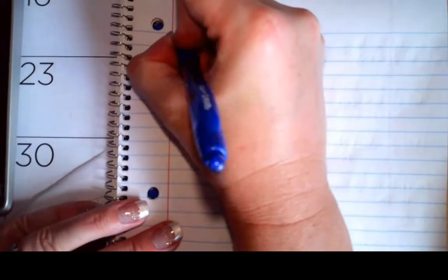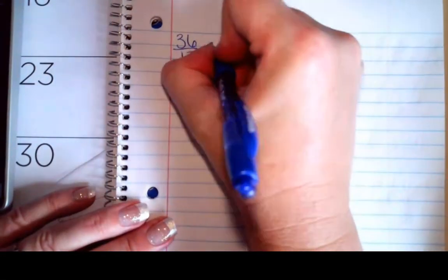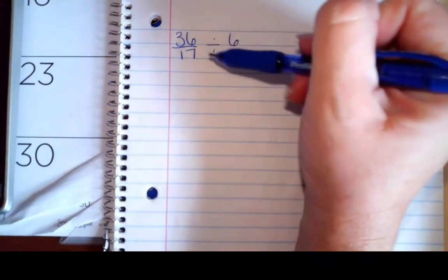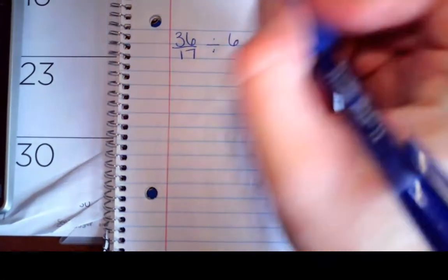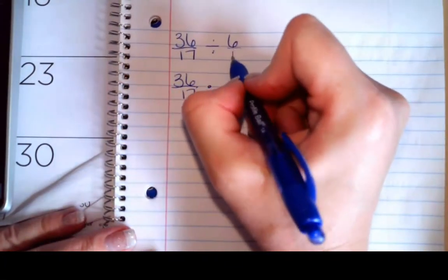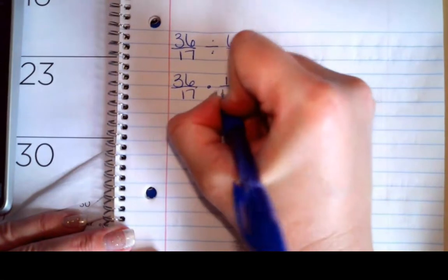So let's try a couple more. We've got 36 over 17 divided by 6. So what do I notice? Immediately, I see division. So I'm going to change that to multiplication by the reciprocal. So I can write anything over 1 if I need to have it in fraction form. So when I flip 6 over 1, it becomes 1 over 6.